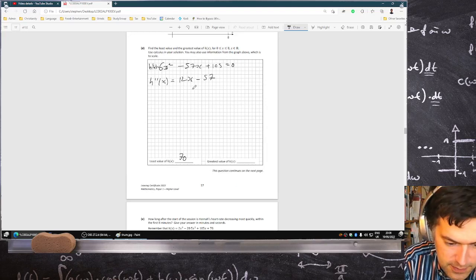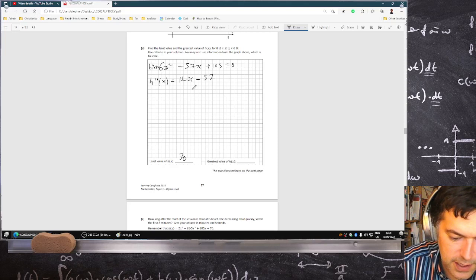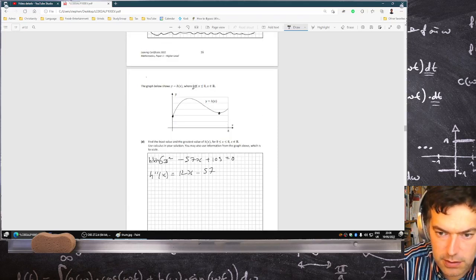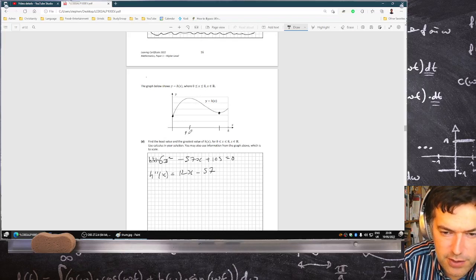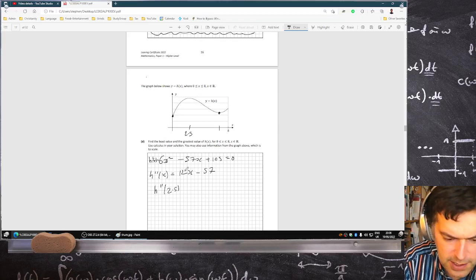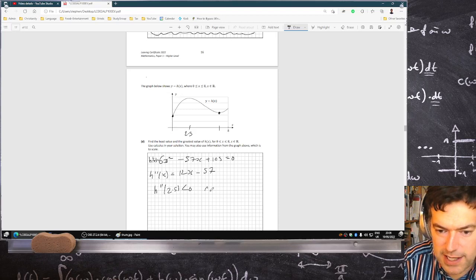If you solve this quadratic using the minus b formula, you get two values, you get 7, which is what I thought it was, and then 5 over 2, 2.5. And you notice that the second derivative of 2.5 is negative, isn't it? Yeah. So that makes it the maximum one.